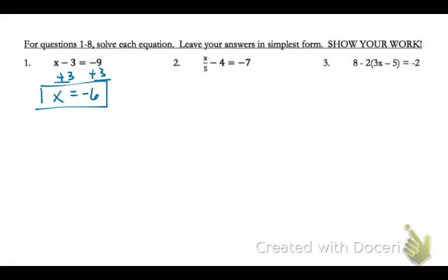On number two, there are two things happening to x. Four is subtracting, and then five is dividing. So we'll start with the operation that is the furthest away from x, and we'll undo that subtraction by adding four to both sides. And then we'll undo the division, because that's what that five means on the bottom of the fraction, by multiplying. So this becomes 1x, which is what we want, equals negative 15.